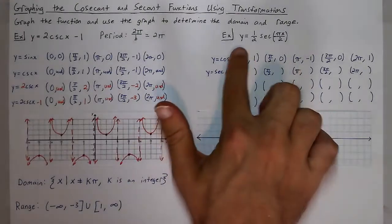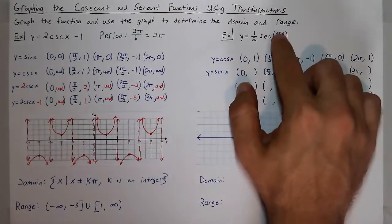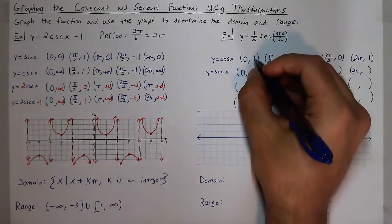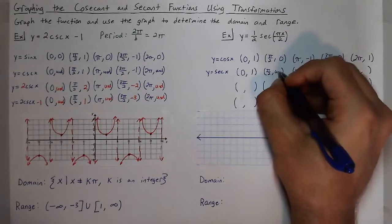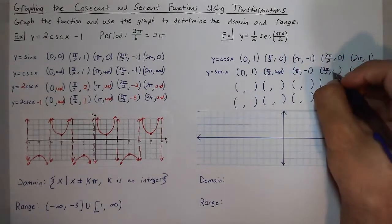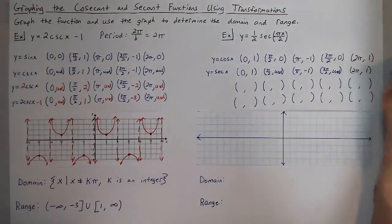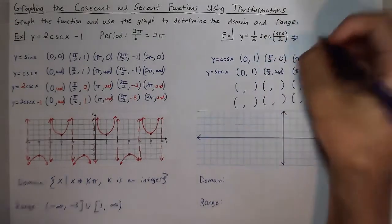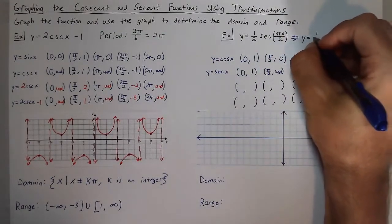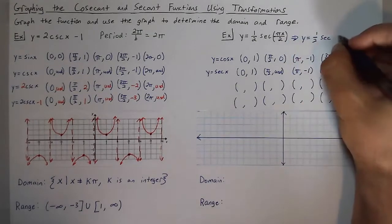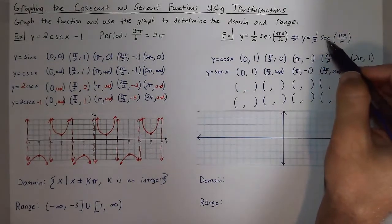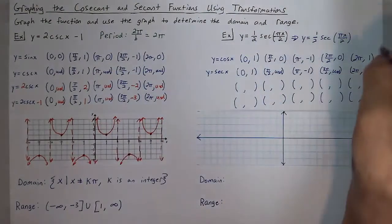Now let's look at y equals 1/2 secant of negative πx over 2. Again, let's go over the key points — secant being the reciprocal of cosine: 1 matches with 1, 0 leads to undefined, negative 1 goes to negative 1, 0 goes to undefined, and 1 goes to 1. To graph this, we'll first get rid of the negative inside the secant function, giving y equals 1/2 secant of πx/2, because secant is an even function so the negative disappears.